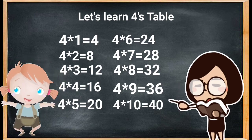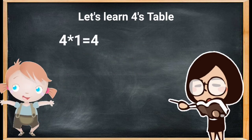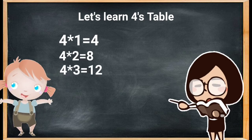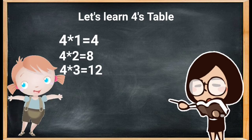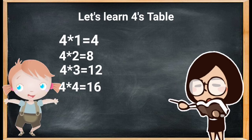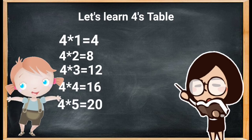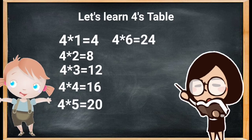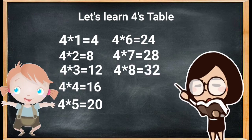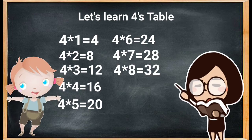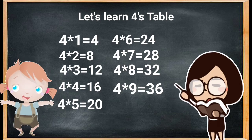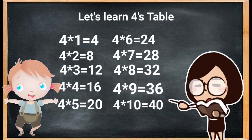Four ones are four, four twos are eight, four threes are twelve, four fours are sixteen, four fives are twenty, four sixes are twenty-four, four sevens are twenty-eight, four eights are thirty-two, four nines are thirty-six, four tens are forty.